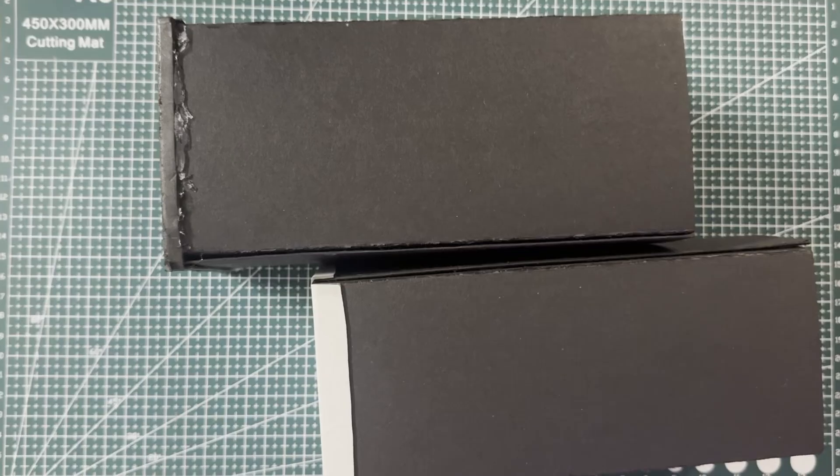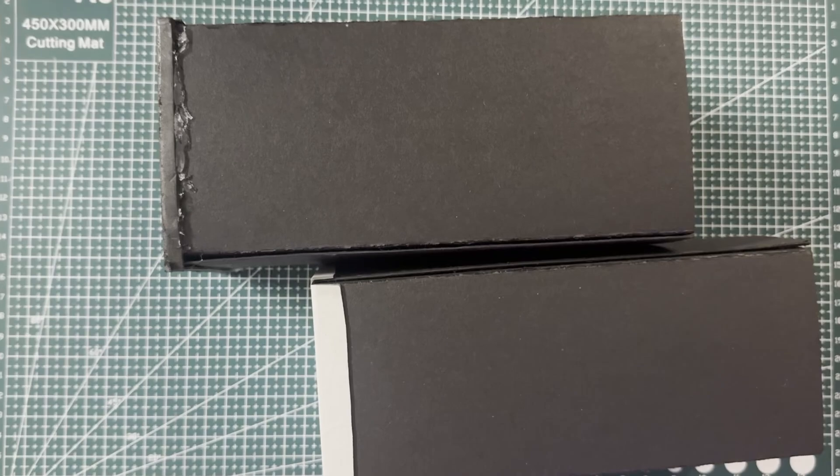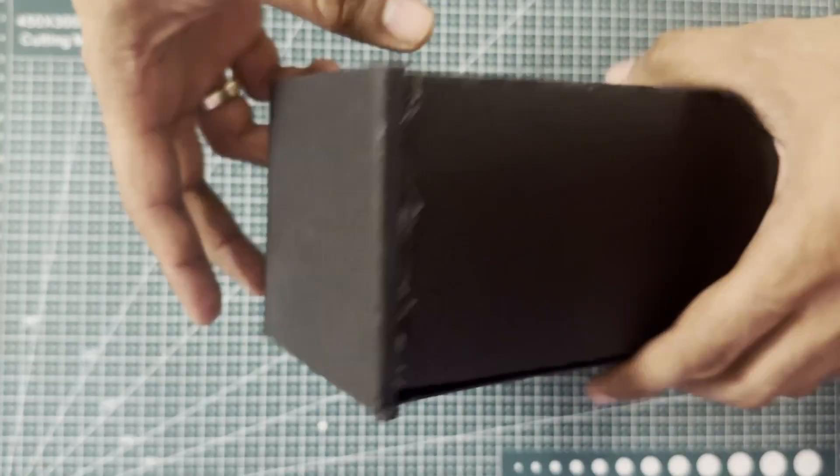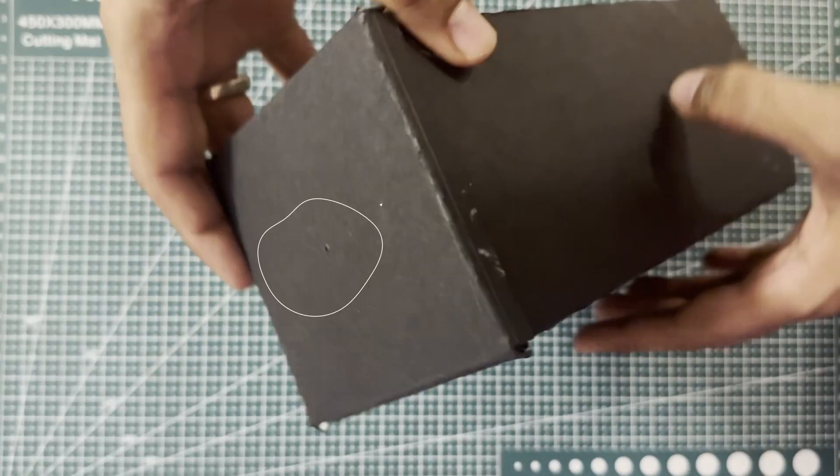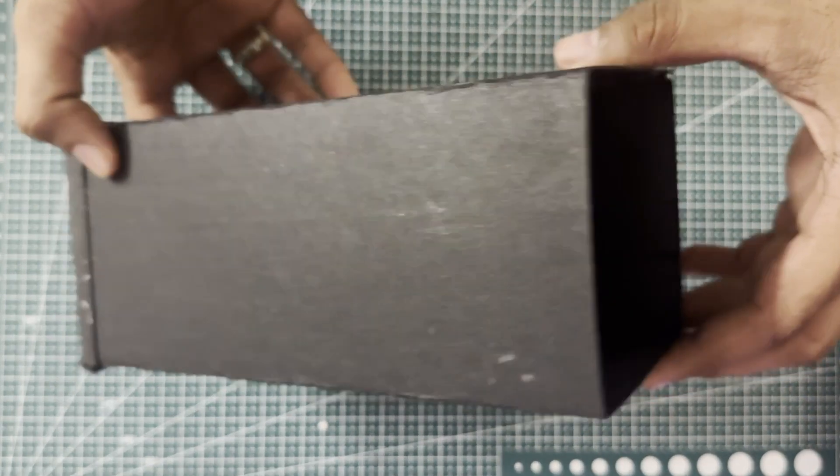These two cardboard boxes together make a pinhole camera. This one on top is the outer box, and see the tiny hole? That's our pinhole. Light enters through this hole.